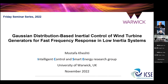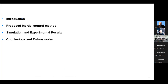Today's discussion is to show why wind turbines need to participate in frequency control and how they are going to participate. The title of the presentation is 'Gaussian Distribution-Based Inertial Control of Wind Turbine Generators for Fast Frequency Response in Low-Inertia Systems.' At the end of today's presentation, we aim to become familiar with fast frequency response, how a wind turbine participates in frequency control, the challenges, and the innovation in this proposed scheme. We'll go through a brief introduction, the proposed scheme backed up with simulation and experiment, then conclusions and ongoing work.